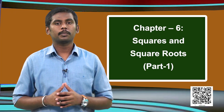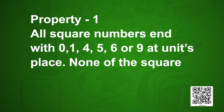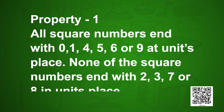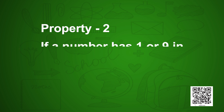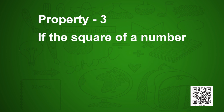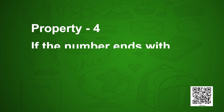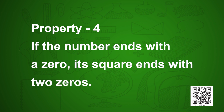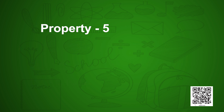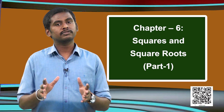Let us revise all 5 properties. Property 1: all square numbers end with 0, 1, 4, 5, 6, or 9 — none end with 2, 3, 7, or 8. Property 2: if a square ends with 1, its number ends with 1 or 9. Property 3: if a square ends with 6, the number ends with 4 or 6. Property 4: a number ending with 0 gives a square ending with 2 zeros. Property 5: a number ending with 5 gives a square ending with 5.